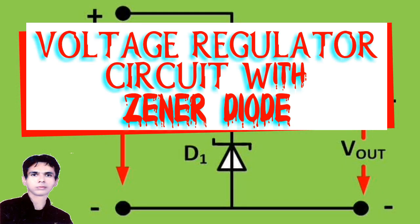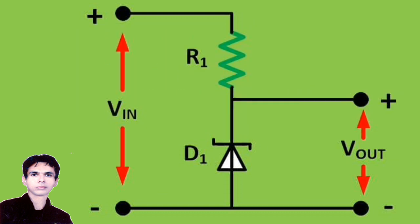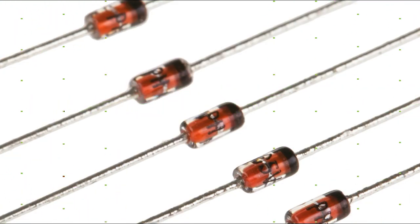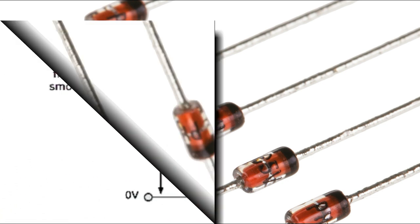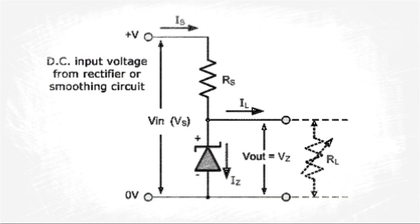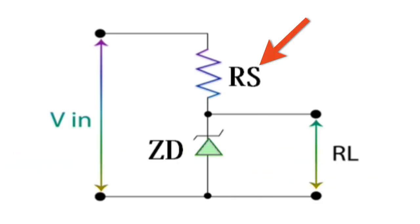In this Zener diode voltage regulator circuit, the Zener diode is the main component that we use as a regulator. In this circuit, we must choose the resistance RS according to the characteristics of the Zener diode and the output voltage. Here we have used a Zener diode with a voltage of 5.1 volts and wiring with a resistance of 33 ohms.